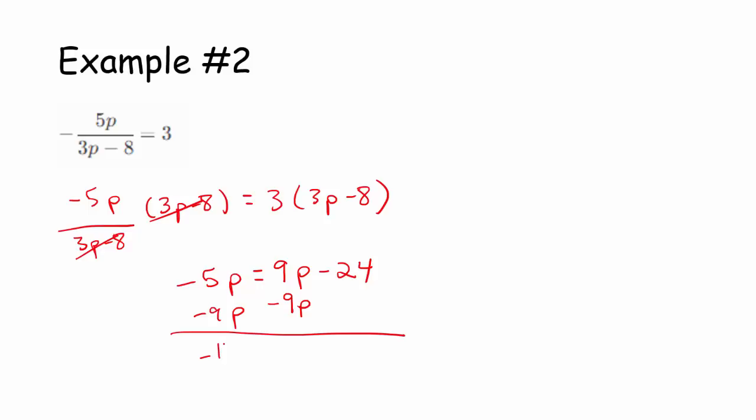Now that's where I get negative 14p equals negative 24. And then I can divide both sides by negative 14. So p equals 24 over 14, but I can reduce that because 24 and 14 are both divisible by 2. So p is 12 sevenths.